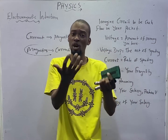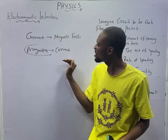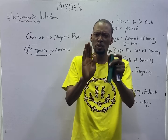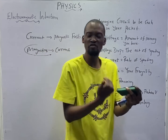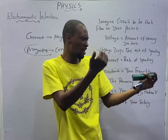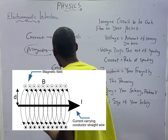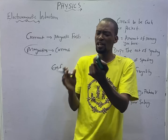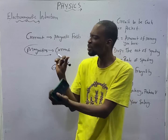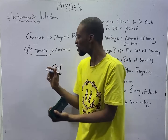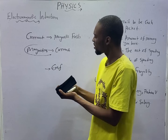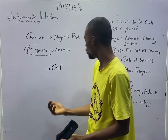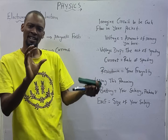Since electromagnetic induction has to do with producing current from magnets, how does it happen? How is current produced from magnets? Take note of this: when there is relative motion between the magnetic field and the conductor, EMF is induced. Anytime you have a magnetic field and a conductor — say a wire — if there is perpendicular relative motion between that magnetic field and the conductor, EMF is induced. EMF can equal voltage, but not always voltage.